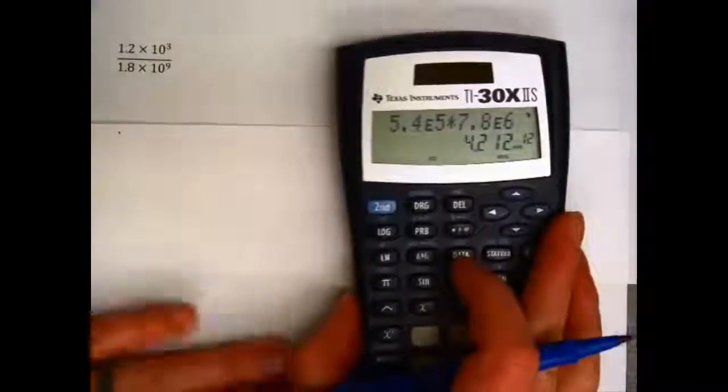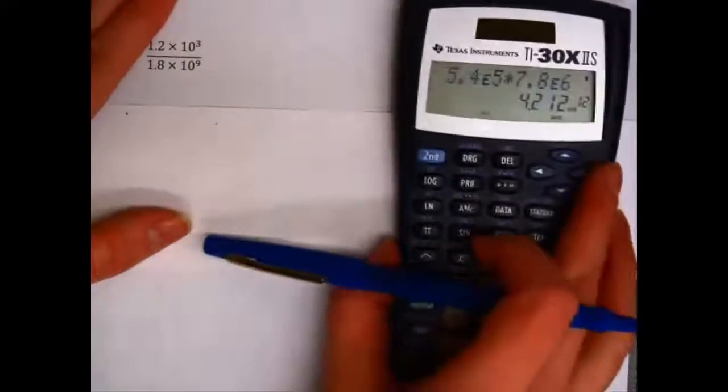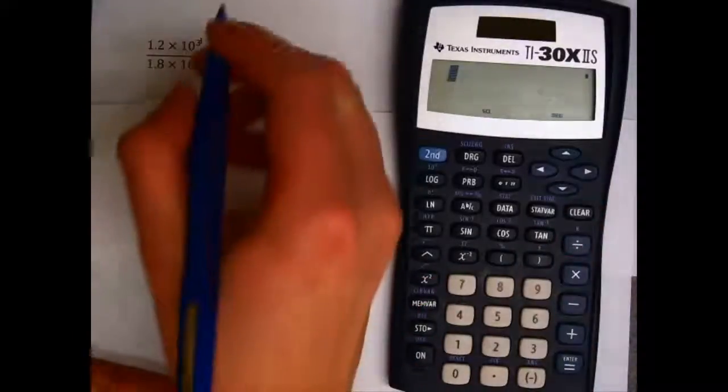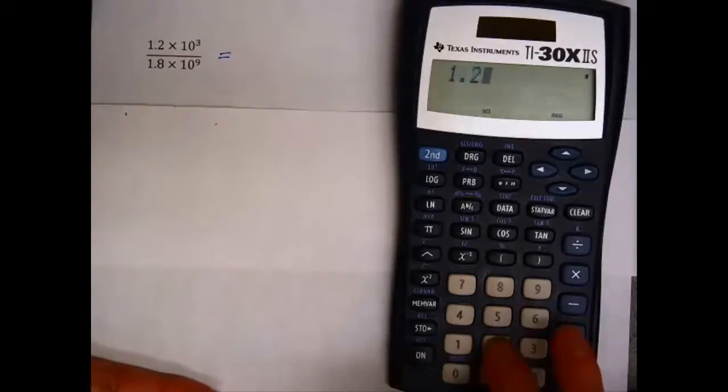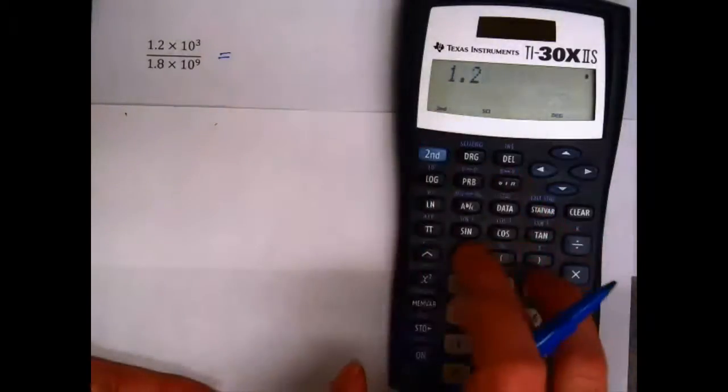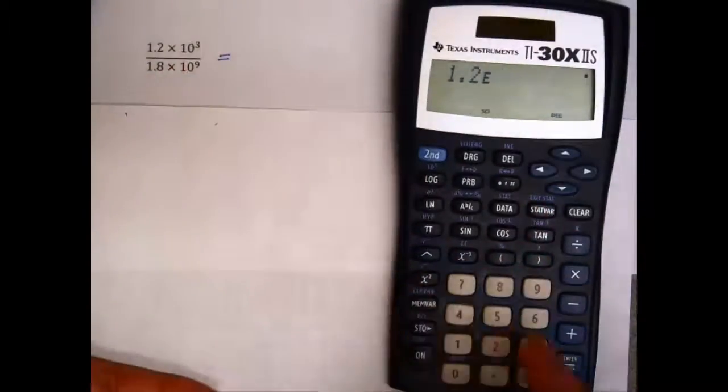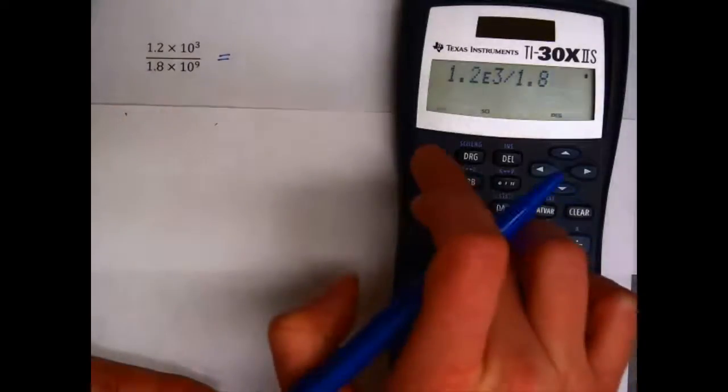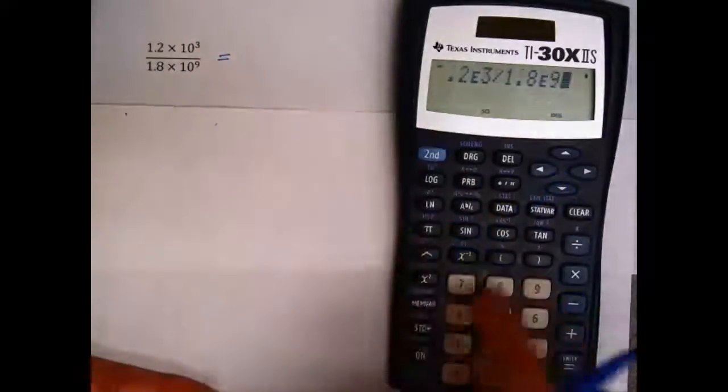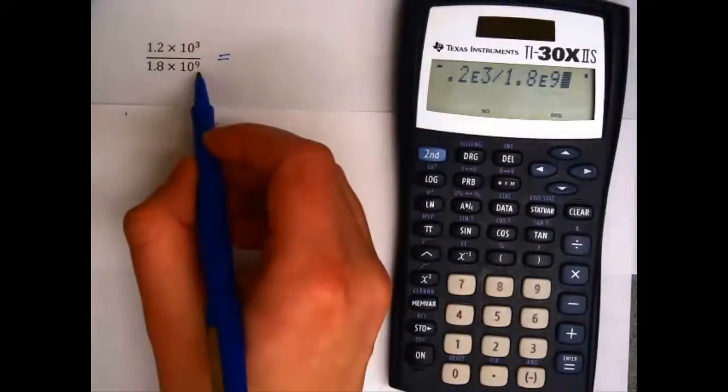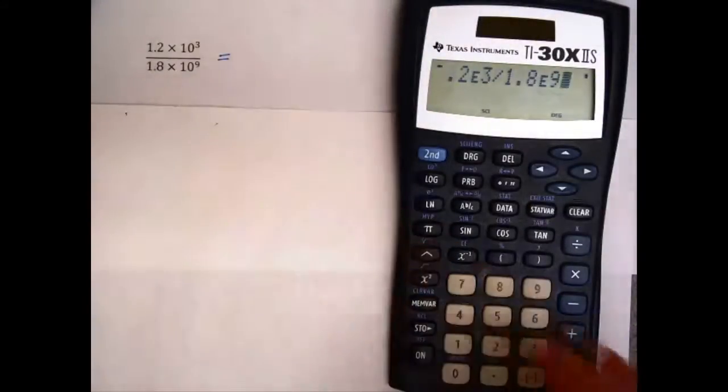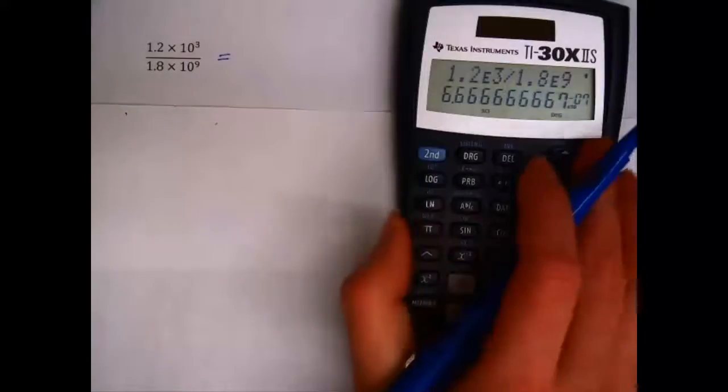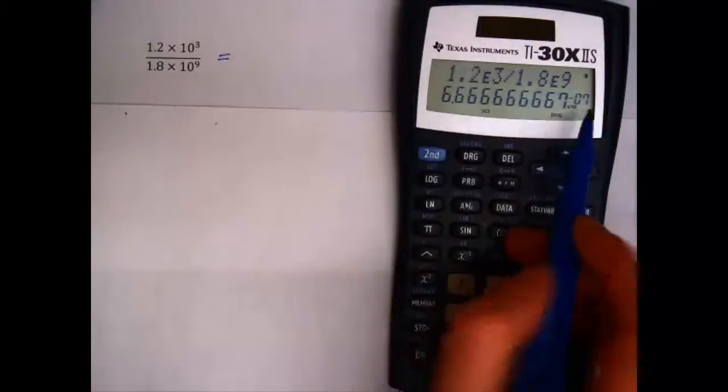Okay, one more thing about scientific notation is you can have exponents that are negative. So if I work out this division problem, 1.2 times 10 to the 3rd divided by 1.8 times 10 to the 9th. 9 is bigger than 3. If I subtracted these exponents, I would have a negative exponent, which I do.